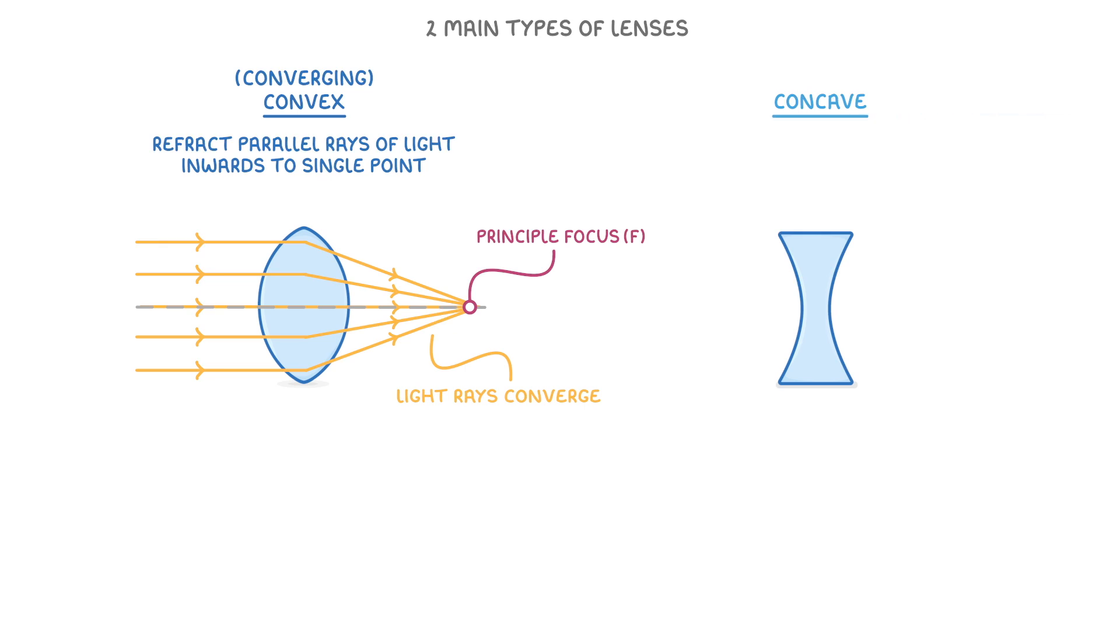Concave lenses, on the other hand, cave in on either side, which causes them to refract parallel rays outwards, so effectively disperse the light.